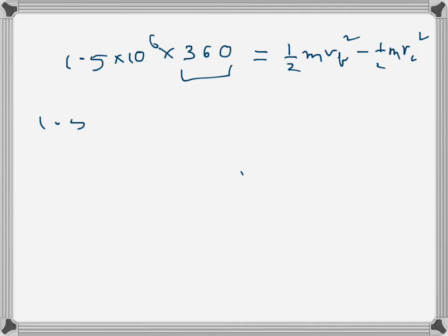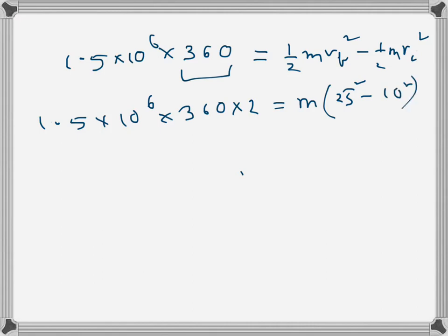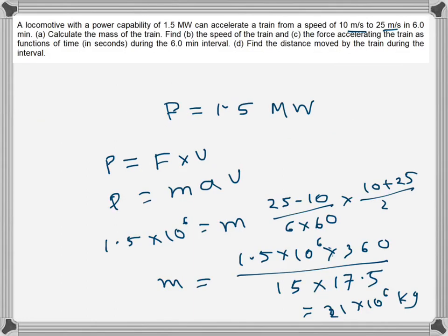Setting up the equation: 1.5 × 10⁶ × 360 = ½m(25² − 10²). Solving for m gives 2.1 × 10⁶ kilograms — the same result as Method 1. So the mass of the train is 2.1 × 10⁶ kg.